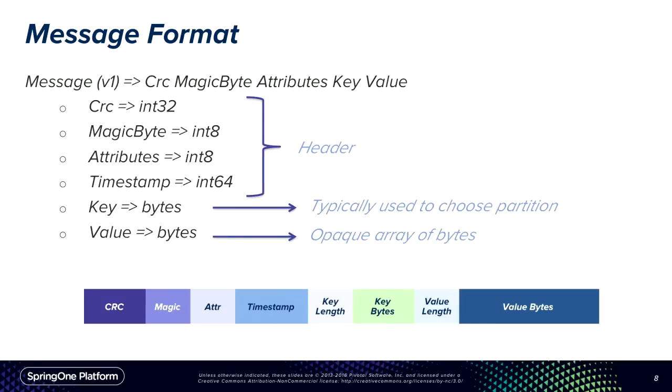This is the message format in Kafka. If you're used to traditional messaging systems like AMQP or JMS, you'll find it's a very basic format: a fixed-size header plus a key and value which, as far as Kafka is concerned, are just opaque arrays of bytes. Producers and consumers can add structure by providing serializers and deserializers. The key is typically used to route messages to partitions — for instance, a sensor ID ensures all messages from one sensor go to a single partition. If you want additional headers like in AMQP, you store them in the payload with serializers to interpret them.